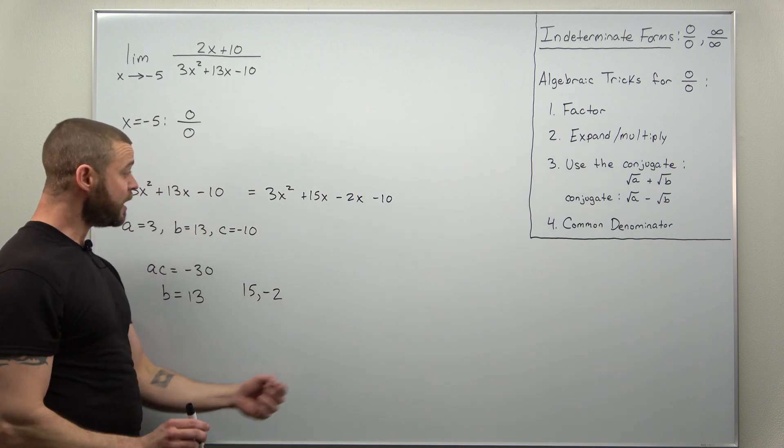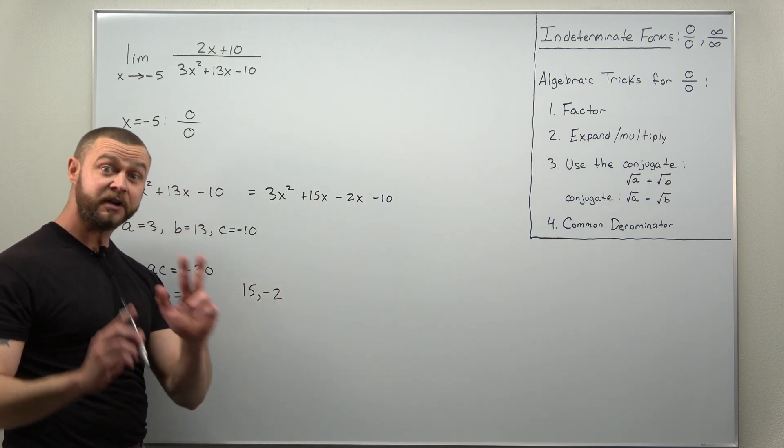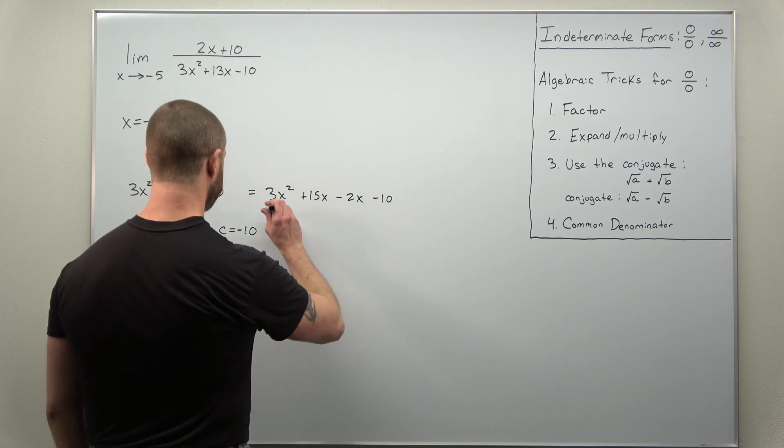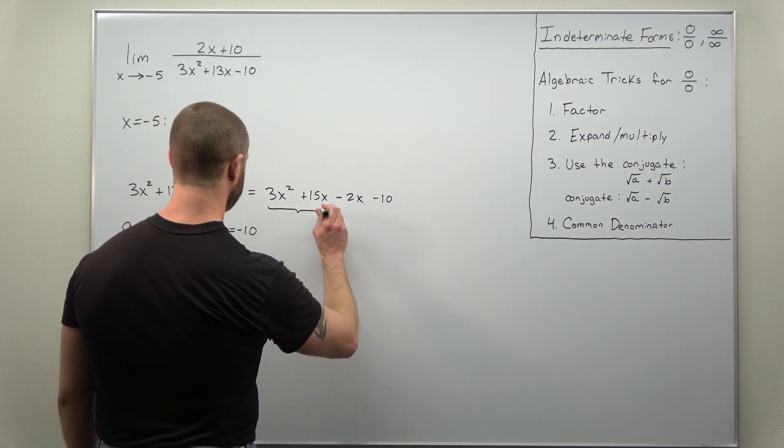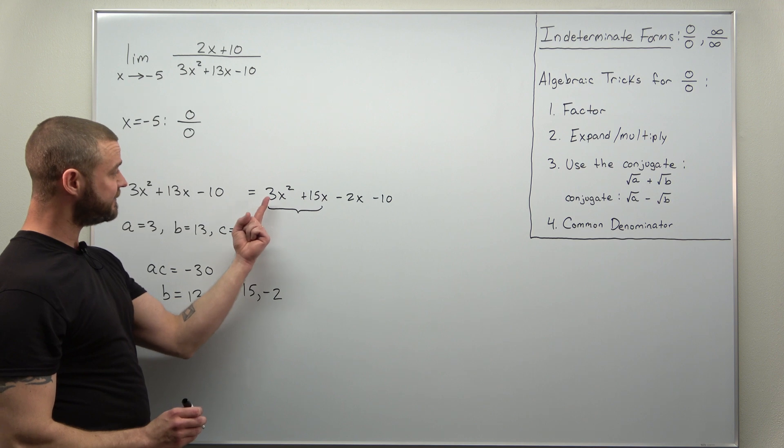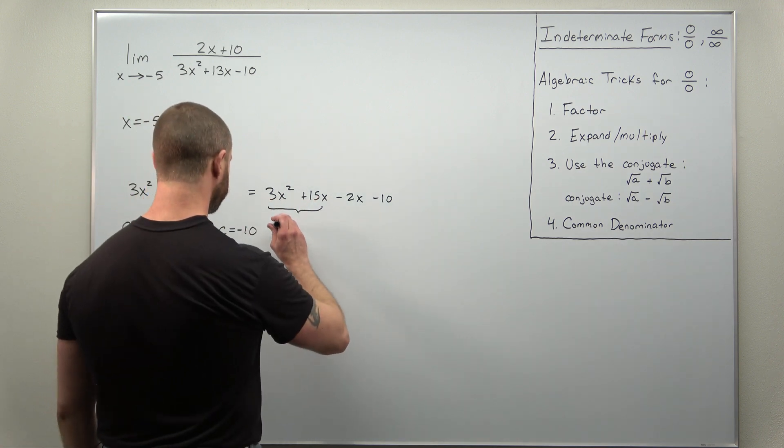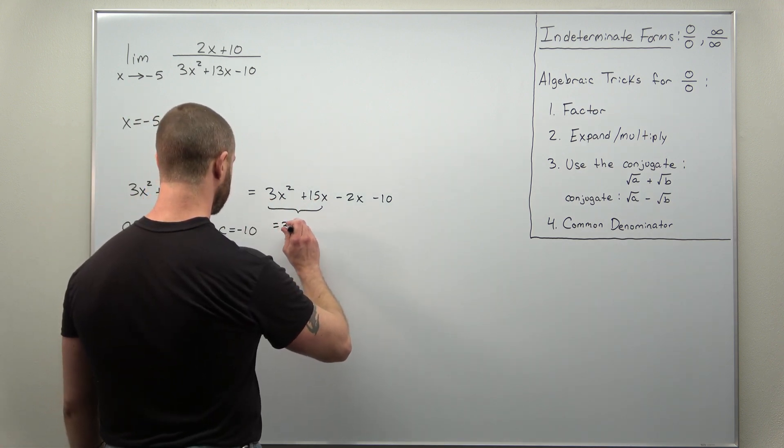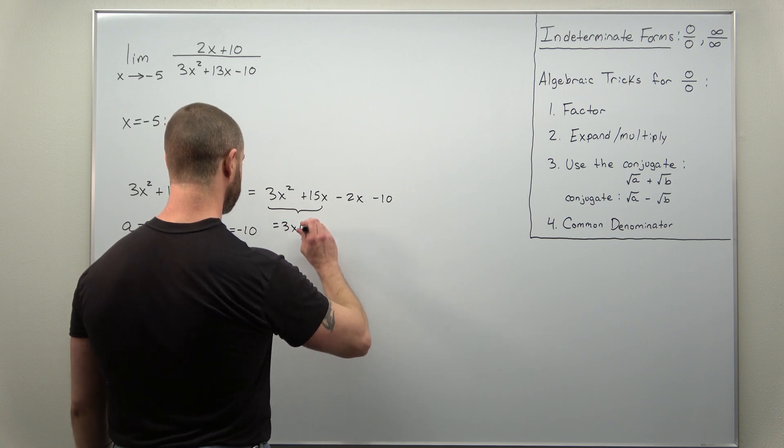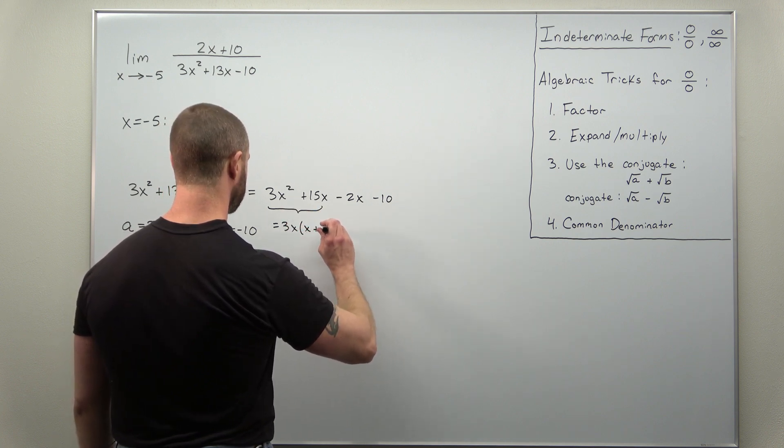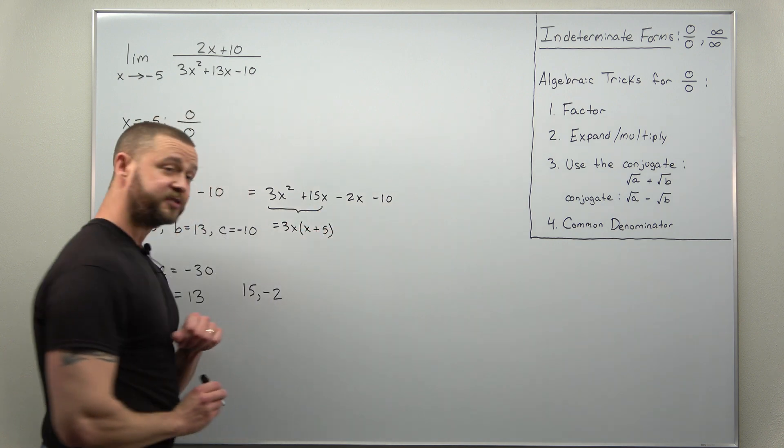And what we do now is try to factor in pairs. That's called factoring by grouping. So it looks like here you can factor out a factor of 3 and x. And that's going to leave you with x plus 5.